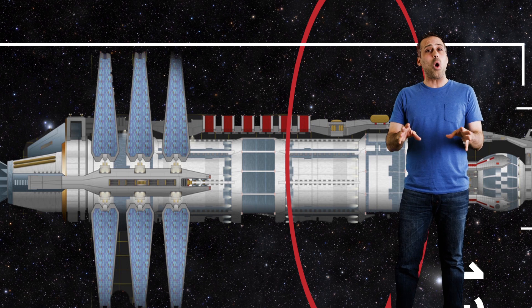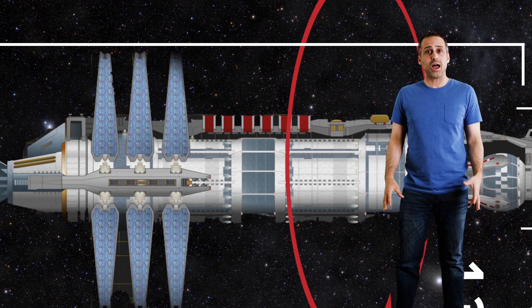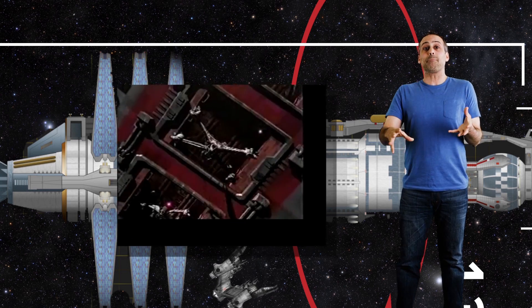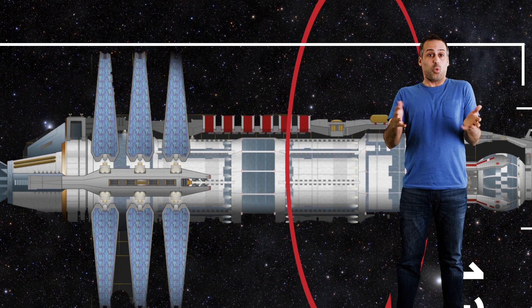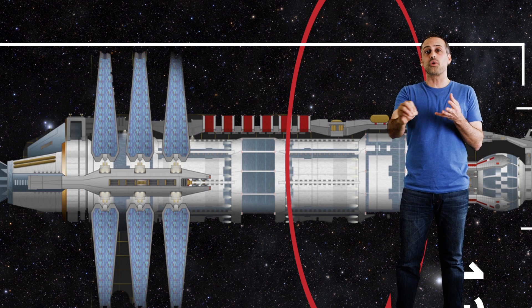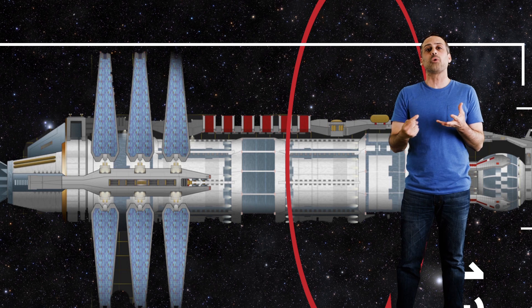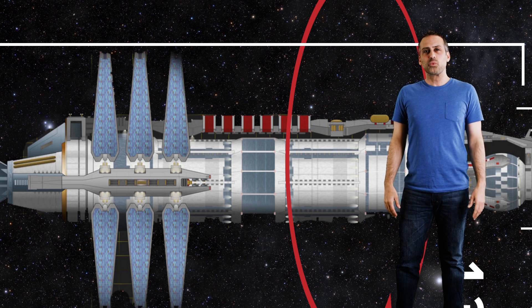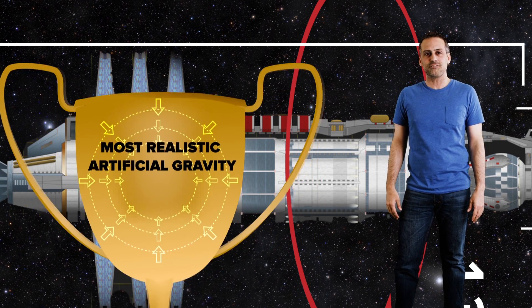Babylon 5 actually gets a lot of other qualitative things right about rotation-induced gravity, like the way that its fighter ships, the Star Furies, launch just by dropping outward, or the fact that objects or people that are at rest near the center of the central axis don't fall toward the rim. They get correct that you already have to be rotating to feel the artificial gravity. So I really want to say that Babylon 5 has the most realistic depiction of artificial gravity in sci-fi.